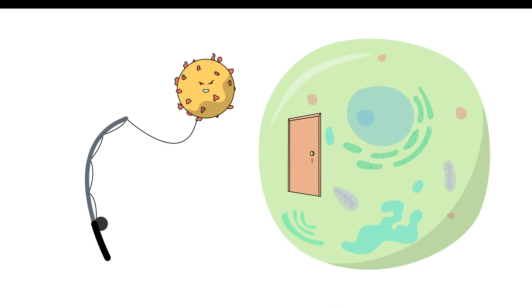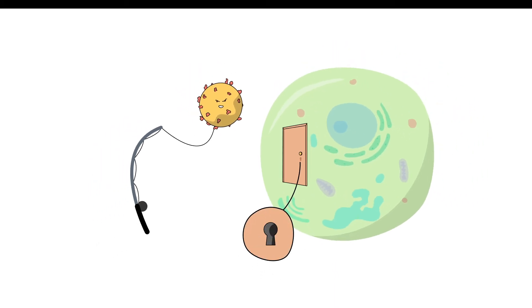In essence, they put the virus at the end of a fishing rod and threw it onto the cell to measure where it binds and with what force, identifying the lock, the receptor, and the key on the virus.